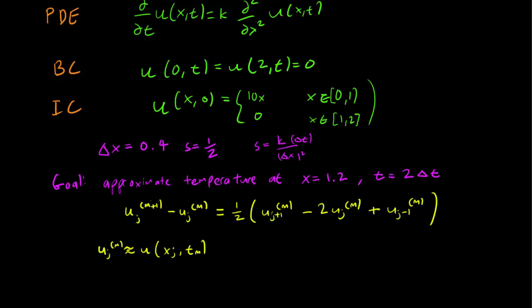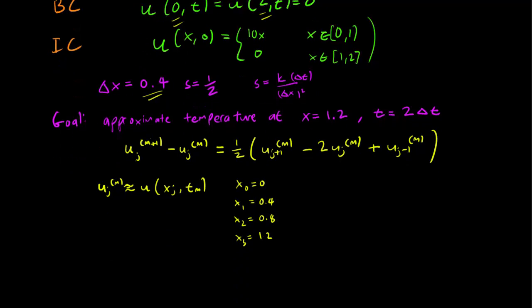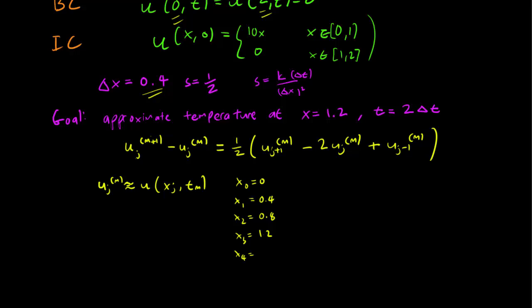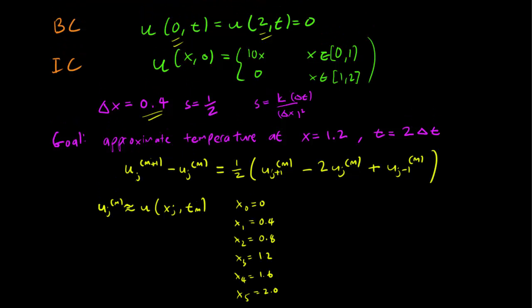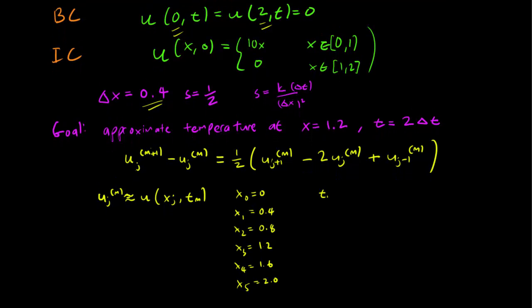So here we have x_0 equals 0. Our rod goes from 0 to 2 and our delta x size is 0.4. So x_1 is going to be 0.4, x_2 is equal to 0.8, x_3 is equal to 1.2, x_4 is equal to 1.6 and finally x_5 is equal to 2.0. Okay that's our x values and our t values. t_0 equals 0. We don't know what the delta t is but that's fine. delta t, t_2 equals 2 delta t and so on.